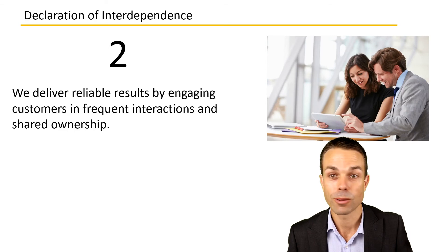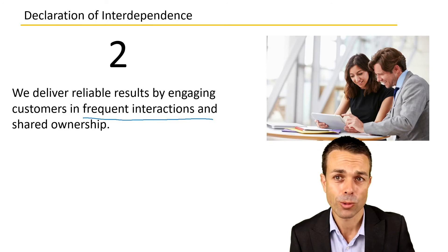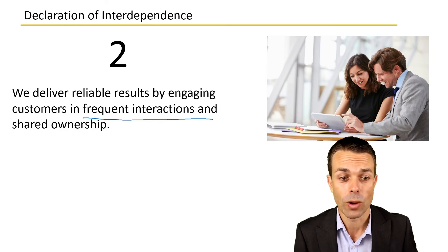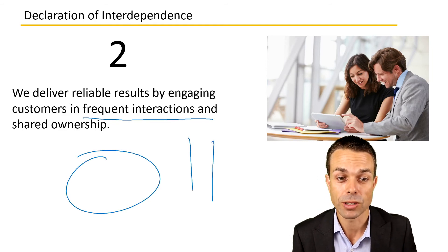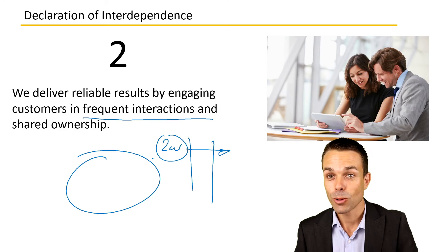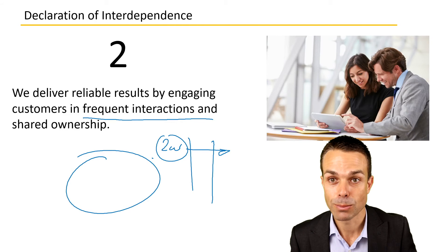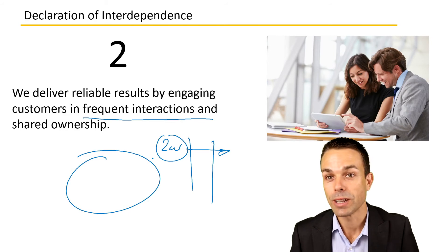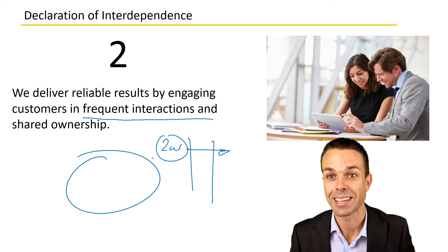The second principle: we deliver reliable results by engaging customers in frequent interactions and shared ownership. This is the product owner and the whole team approach, where everyone is involved and we're touching base with the customer very frequently. Within our two-week iterations, we're delivering something the customer can see, feel, and touch — they can say this is exactly what I had in mind, or it isn't, and we can adjust.